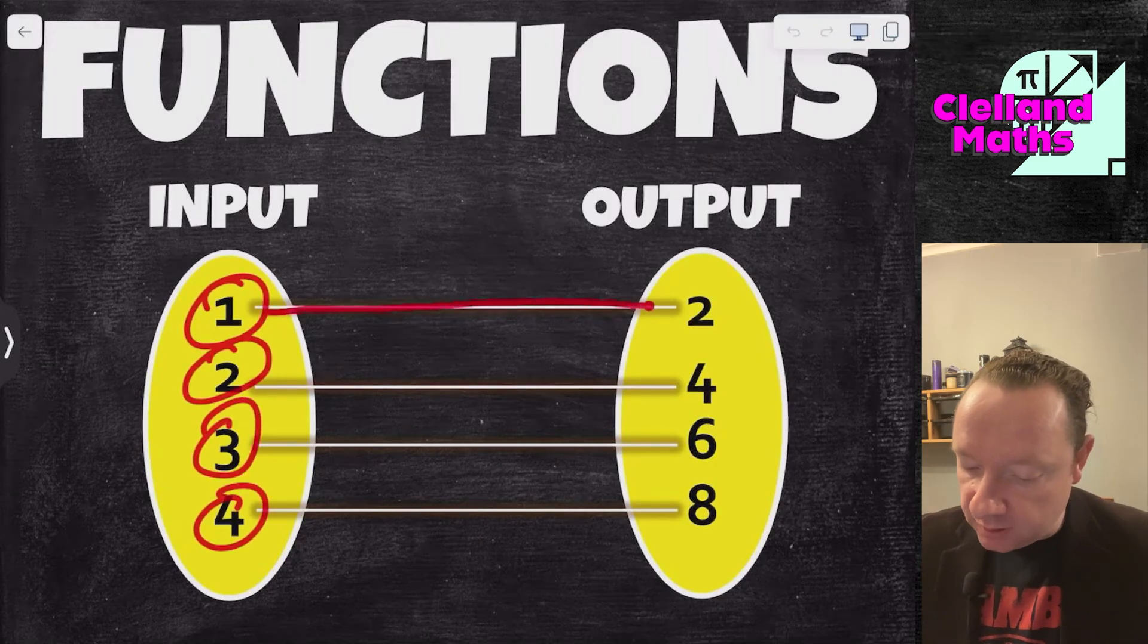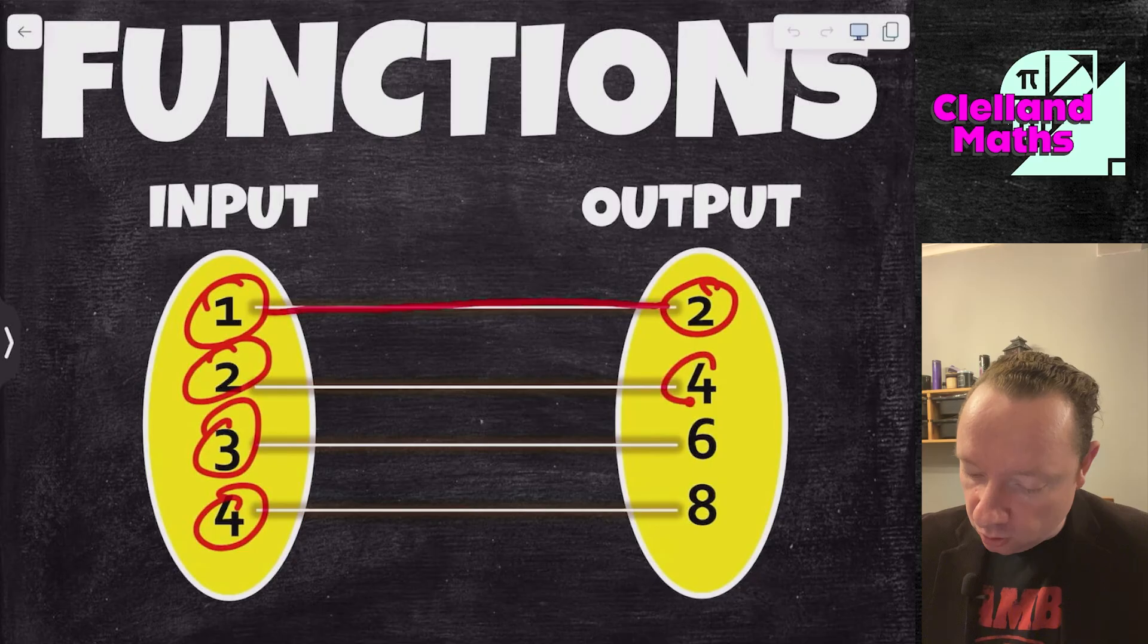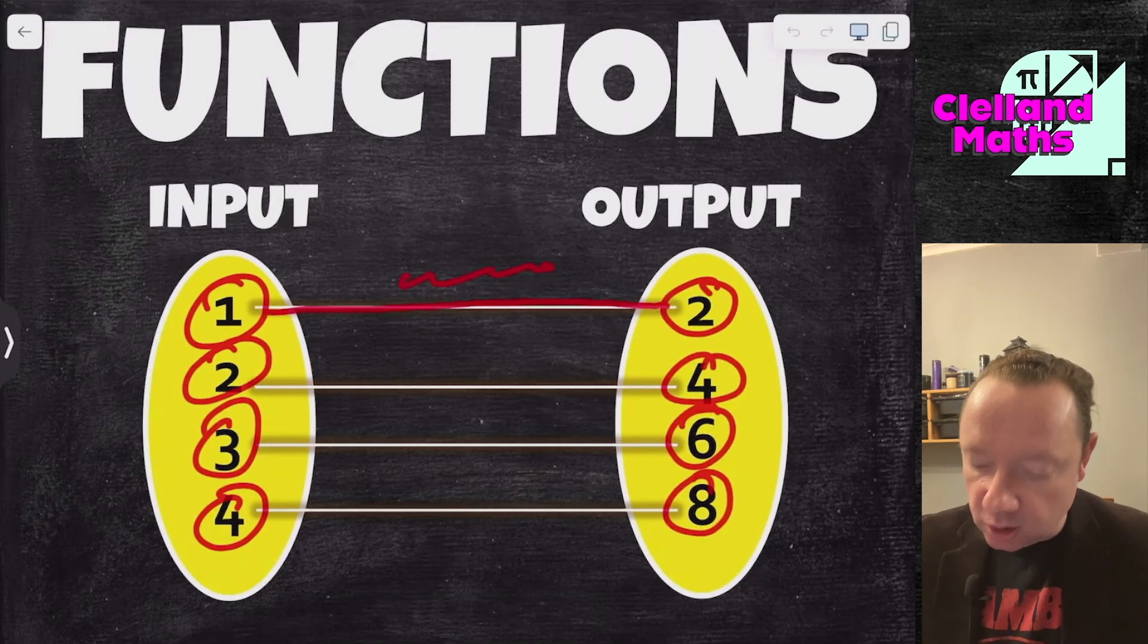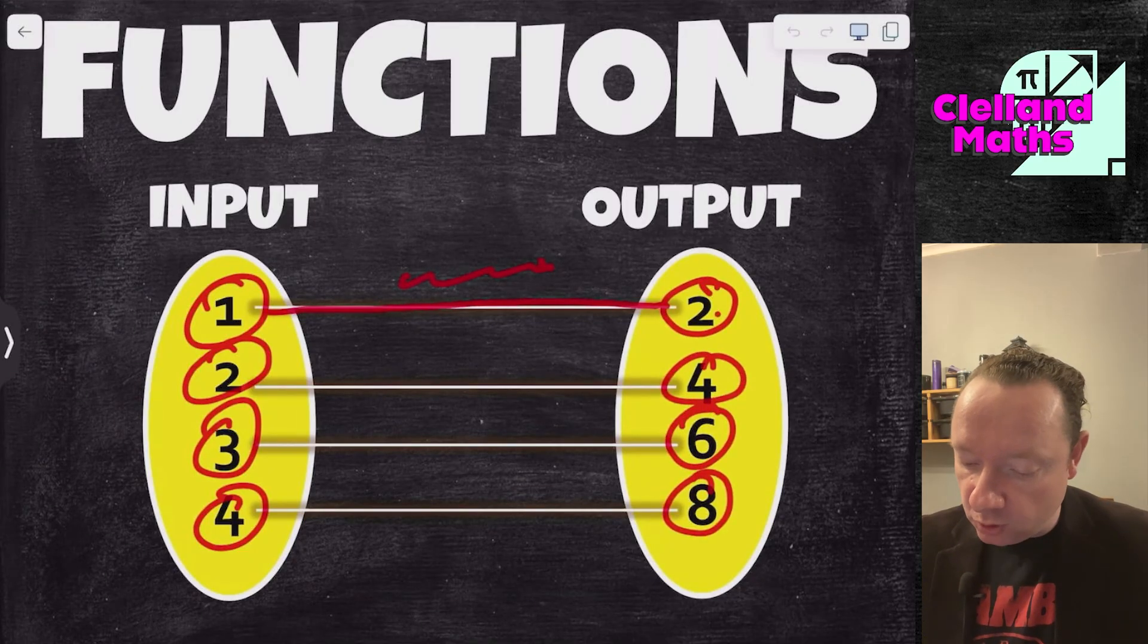And it maps to a particular number and I get 2, 4, 6 and 8. So some sort of instruction is happening in the middle to get me 2, 4, 6 and 8.